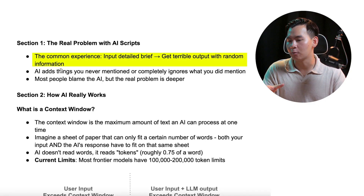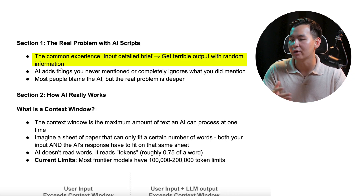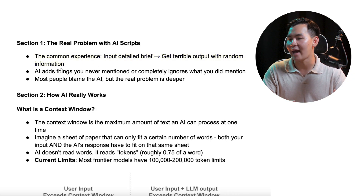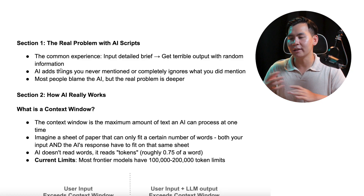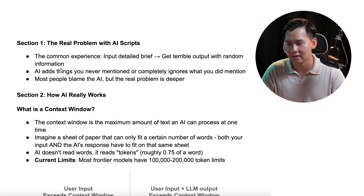They'll input their detailed brief into ChatGPT or Claude and then they'll get terrible output with random information — AI adds things you never mentioned or completely ignores all of the information you've given it and writes something completely different. What most people do here is blame the AI, but the problem runs deeper. It has to do with how AI fundamentally works.